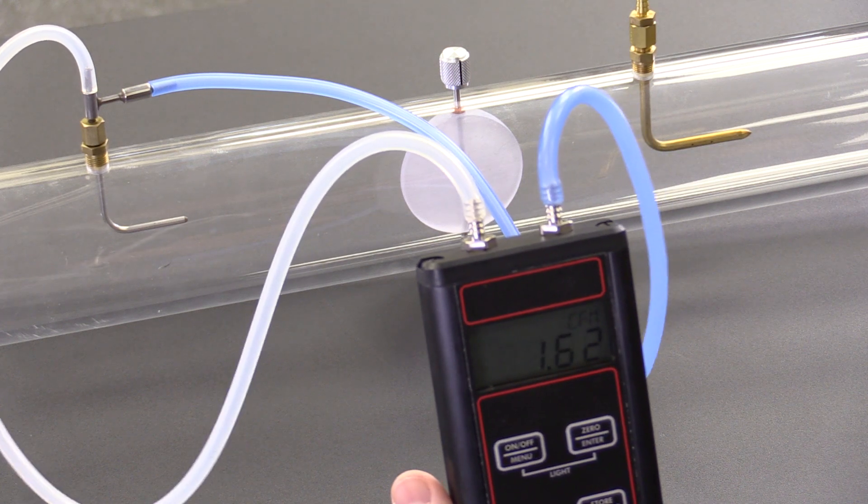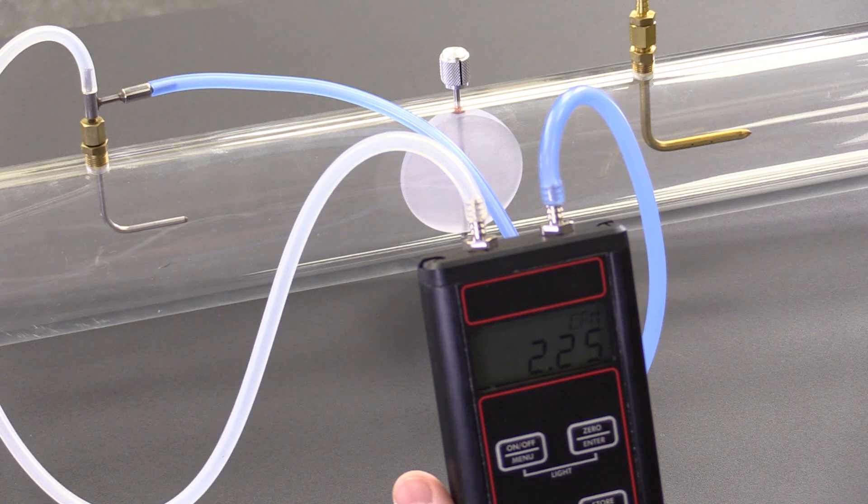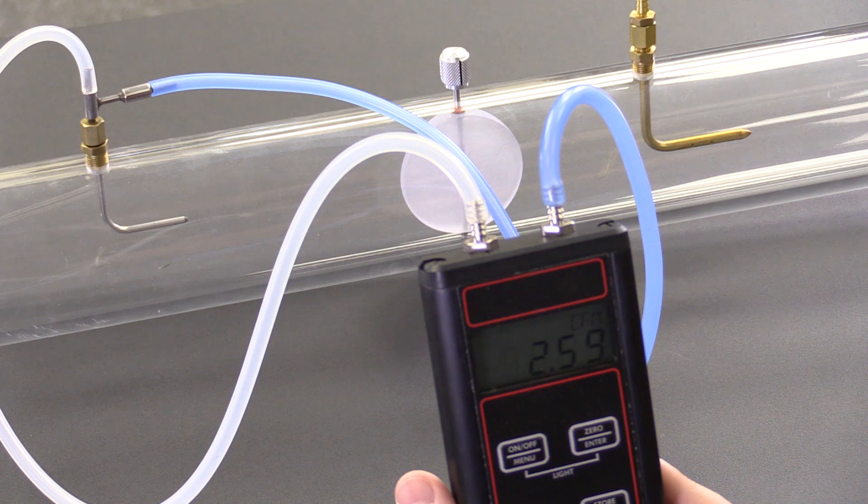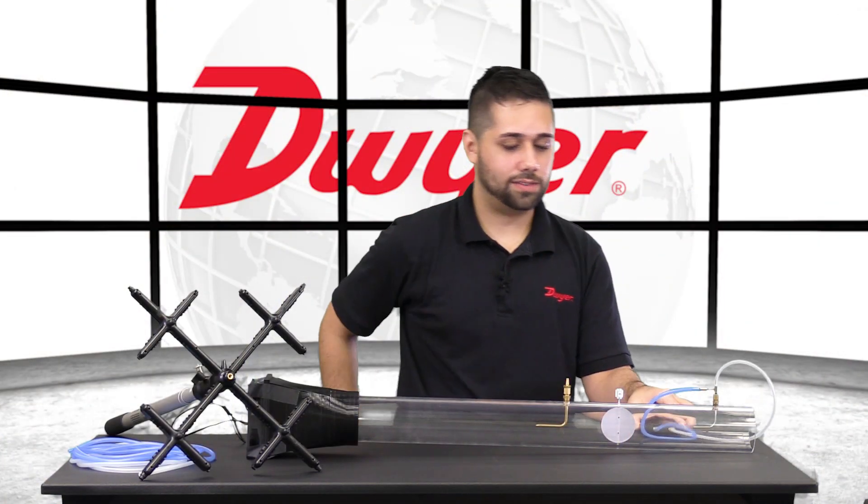And now we can turn on our airstream. And there we are. Looks like we're around 2 CFM. And that's how you use the 477AV with a 167 pitot tube.